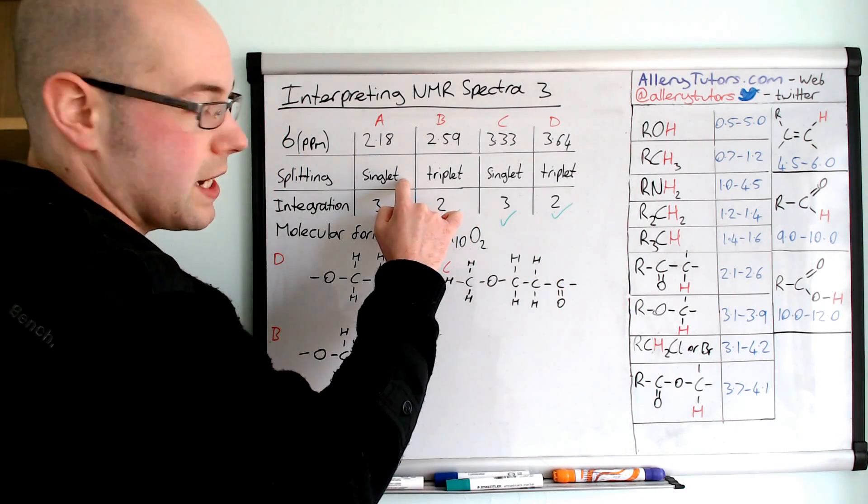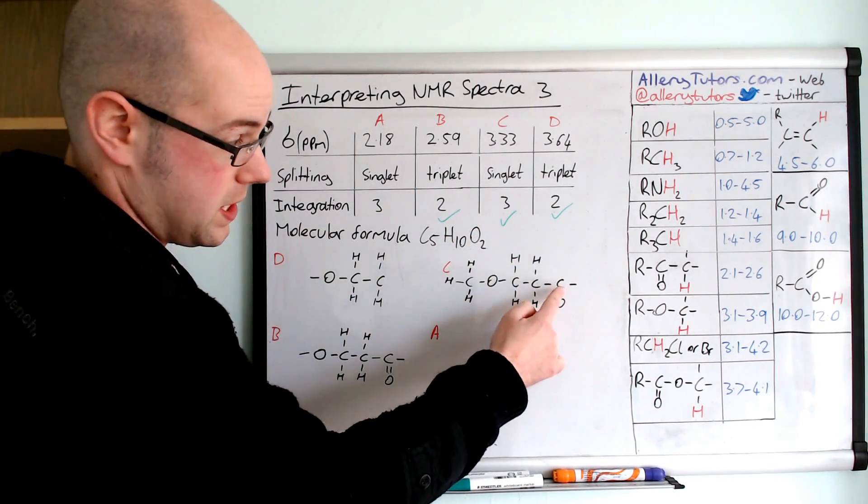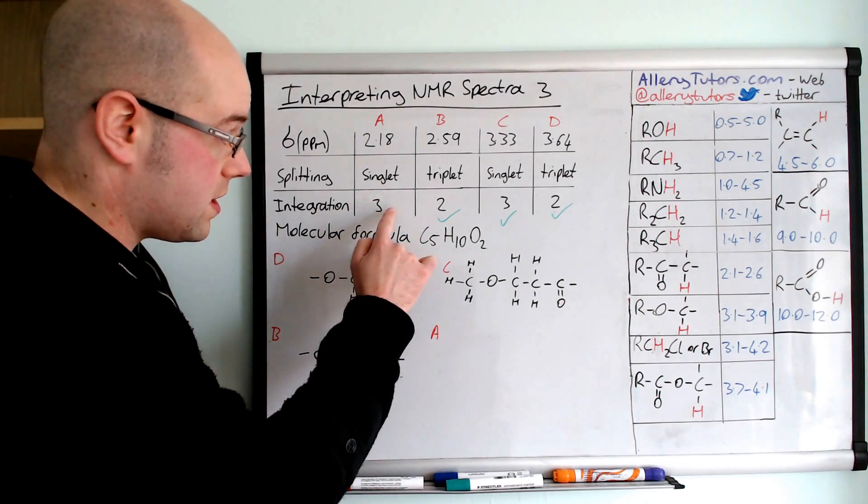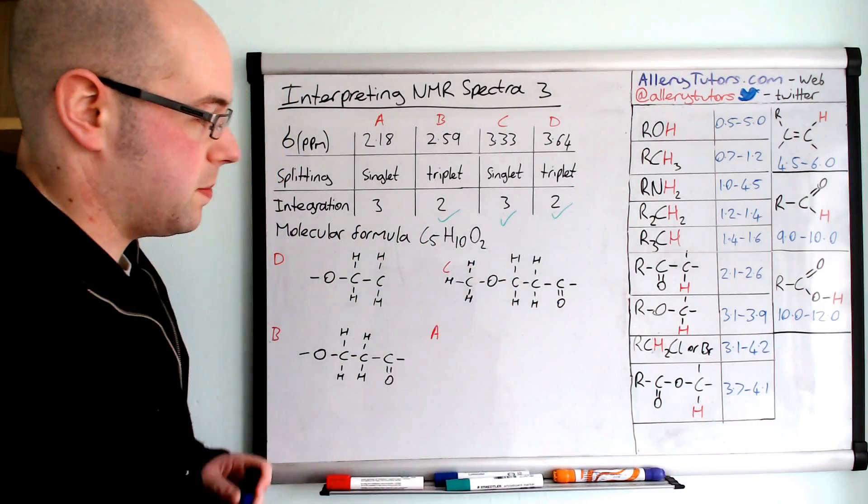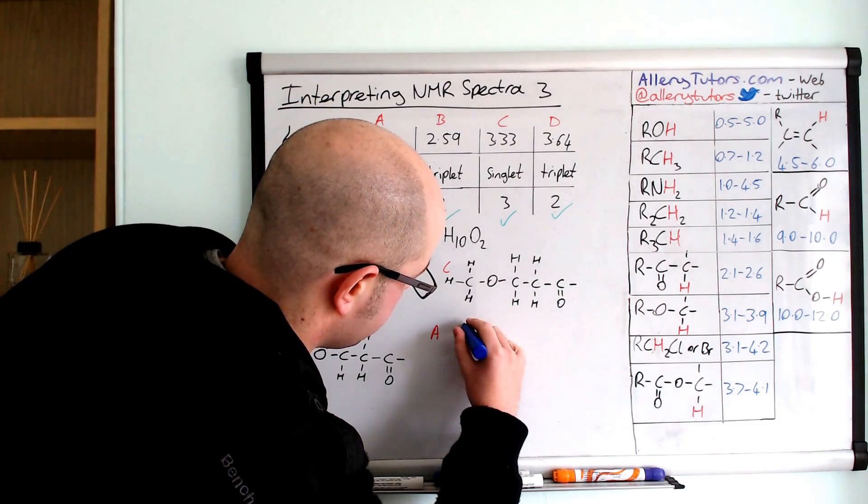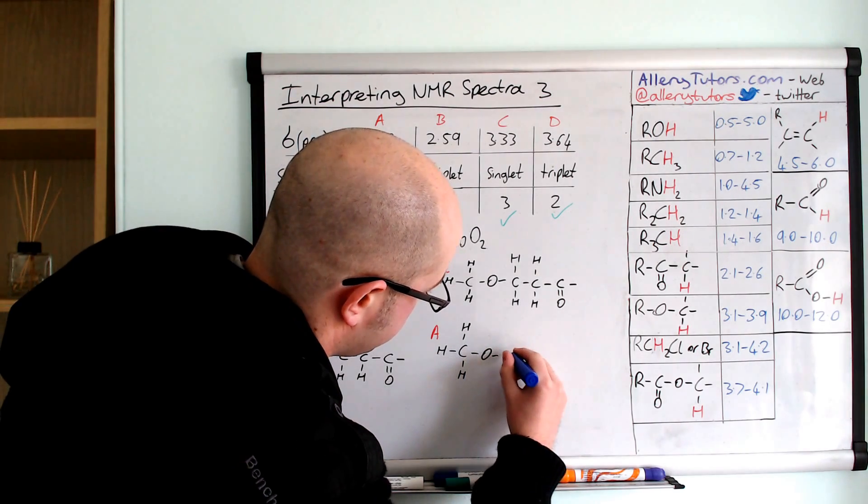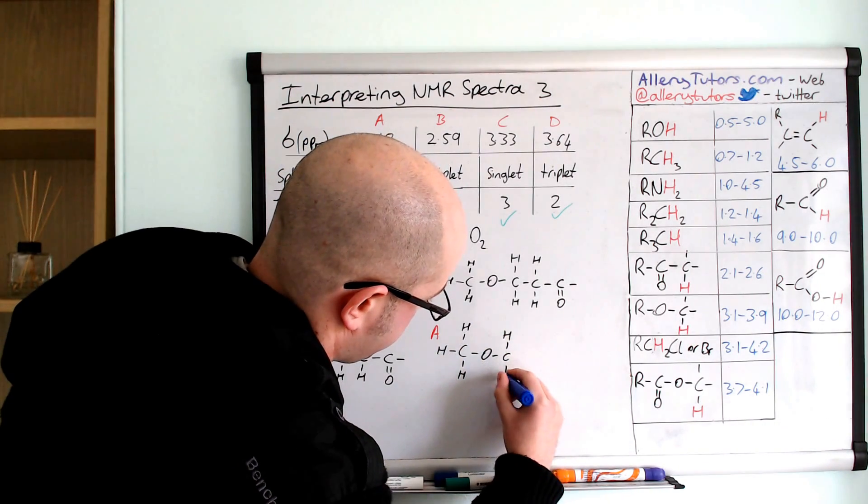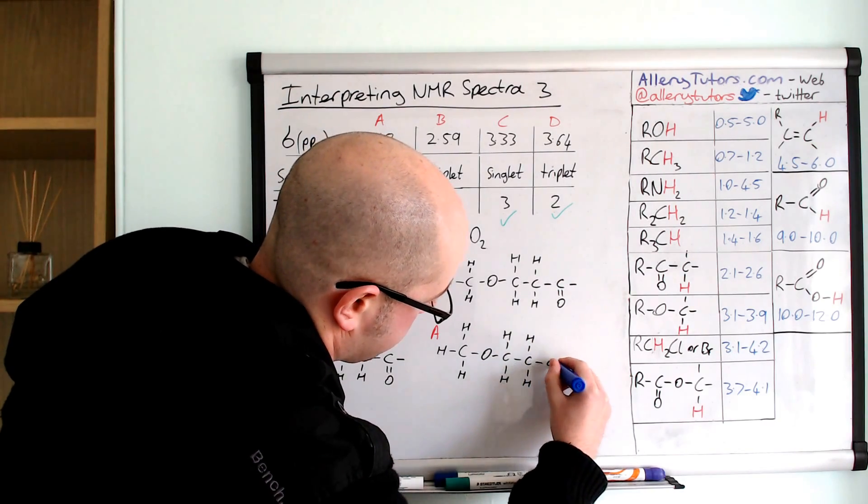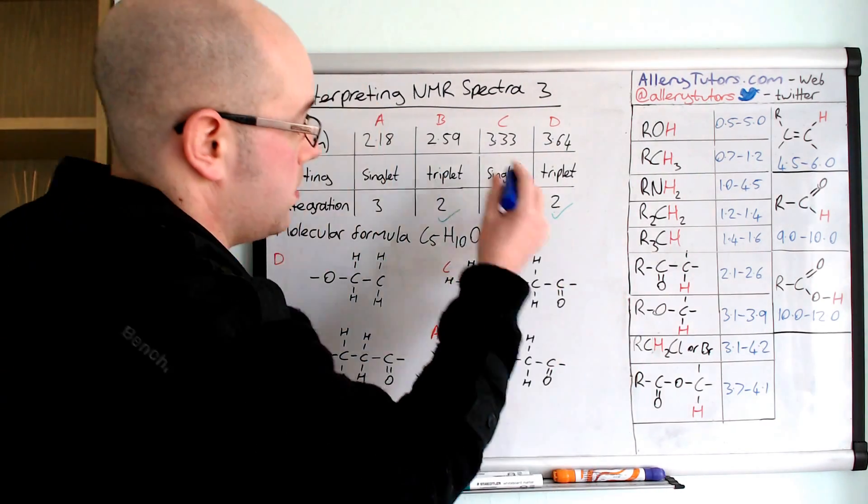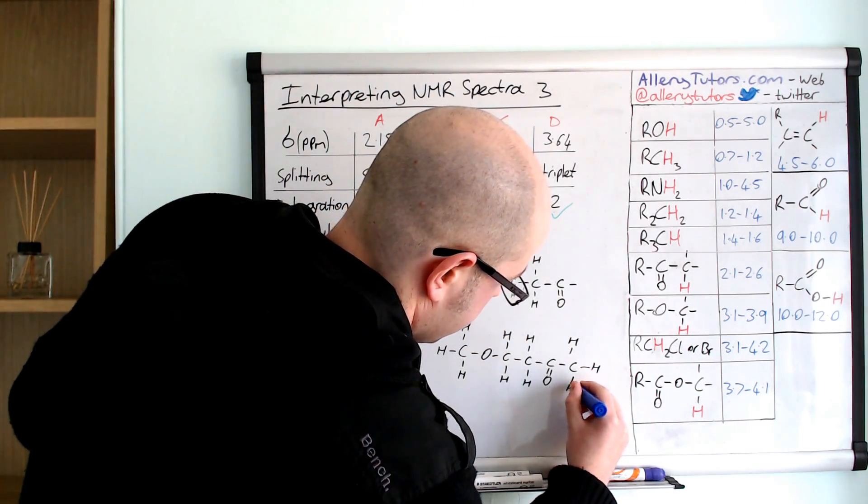It tells us it's a singlet, which means we've got a group of hydrogens next door to a carbon with no other hydrogens on it, which fits this as well. And it tells us that this environment has three hydrogens in itself. So that would mean that this would have to be a CH3. So I'm just going to draw our molecule, redraw it out again, and this should give us our final molecule. And then at the end, we said we have the CH3, so we'll put that at the end there.